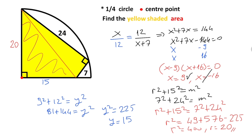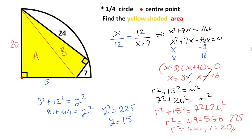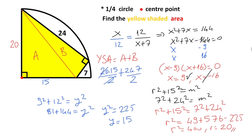Let's call the first shaded region area A and the second shaded region area B. So yellow shaded area equals A plus B. We know that region A equals 20 times 15 over 2, and region B equals 24 times 7 over 2. Simplifying the expression: 150 plus 84. That means yellow shaded area equals 234 square units.